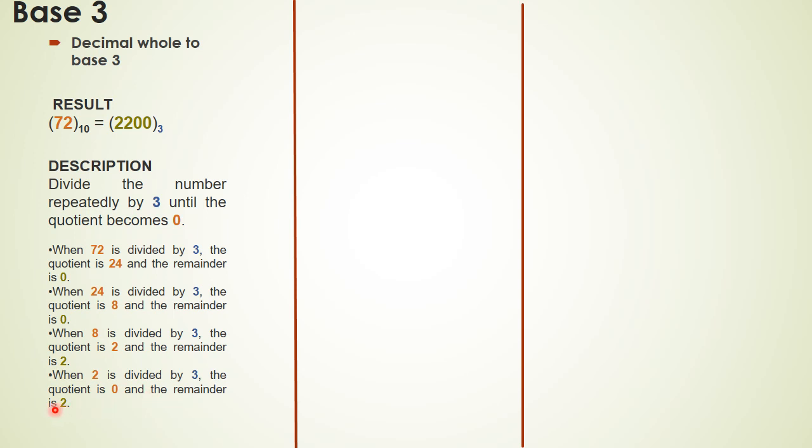When 2 is divided by 3, the quotient is 0 and the remainder is 2. As I found the quotient is 0, I will stop the division and will start writing the number of base 3 by moving from bottom to top. Bottom 2, then 2, then 0 and 0. So I can write the number 72 in base 3 as 2200.